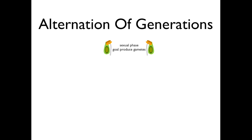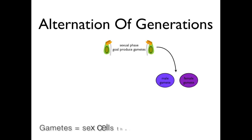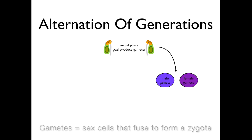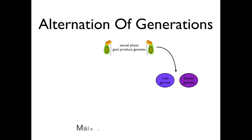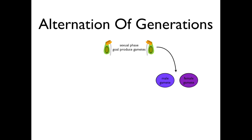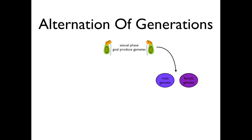The goal of the sexual phase is to produce gametes. Gametes are male and female sex cells that combine in pairs to form a zygote, or fertilized egg. The male gamete is called a microspore and the female gamete is called a megaspore. They are collectively referred to as spores. In angiosperms, the male and female gametes fuse together and eventually form a seed.